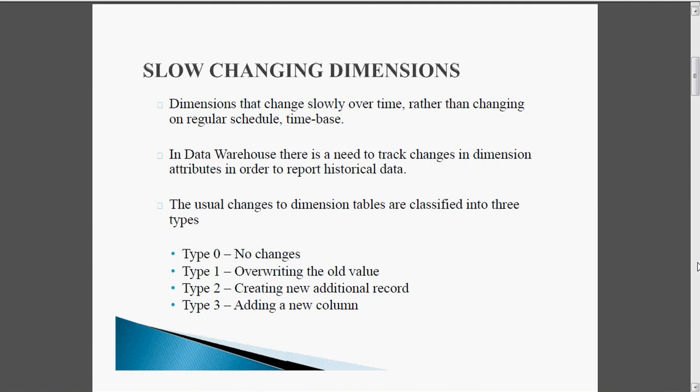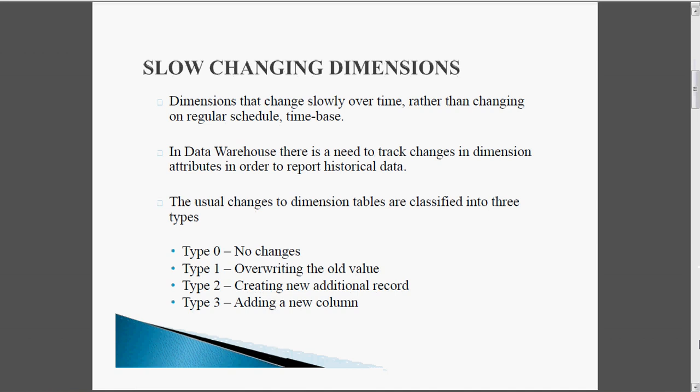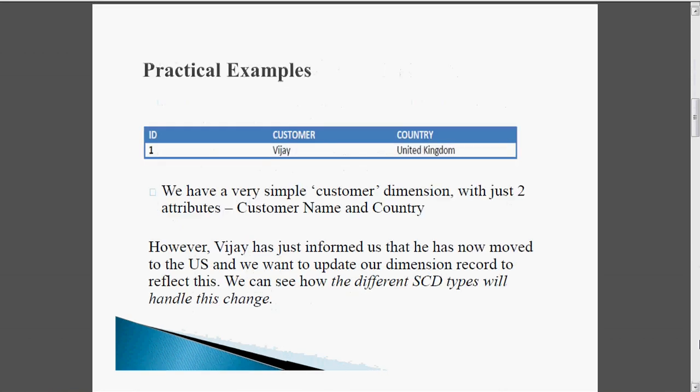We will see all these in detail with practical examples. There is one customer named Vijay and he is staying in the country United Kingdom. There are only two attributes: customer name and country. Vijay has informed us he has moved from United Kingdom to the US, and we want to update our dimension record to reflect this. We will now see how the different SCD types handle this change.